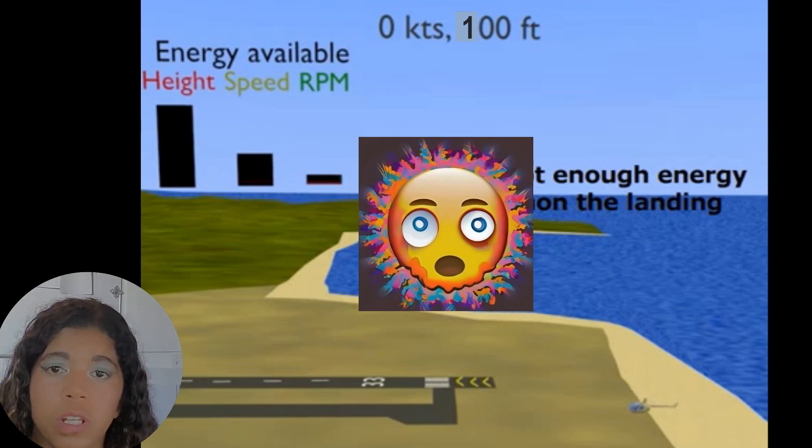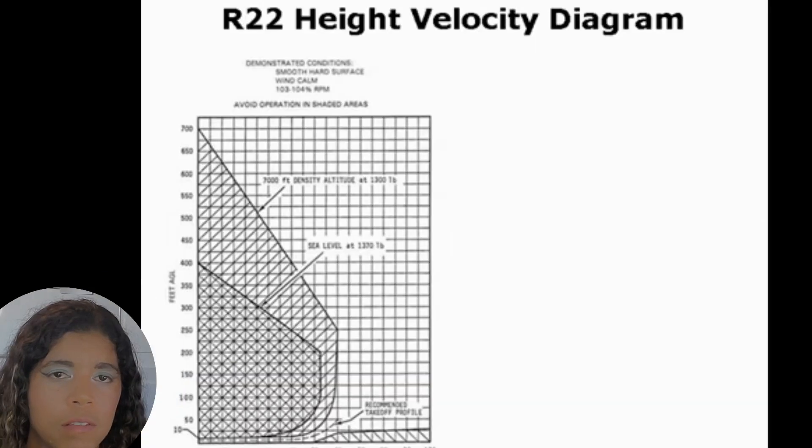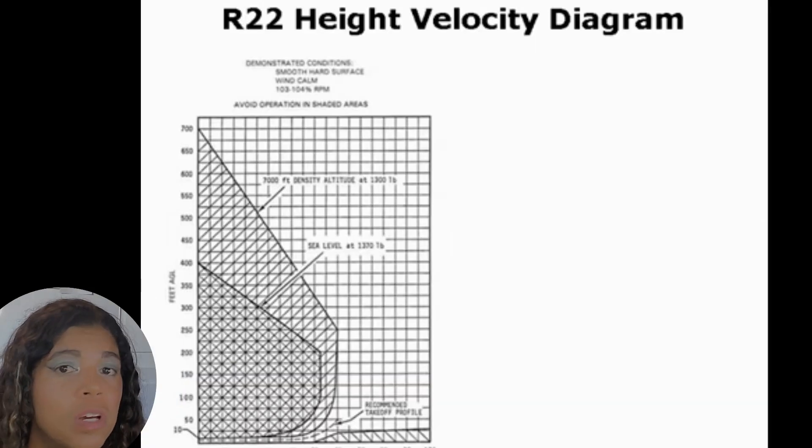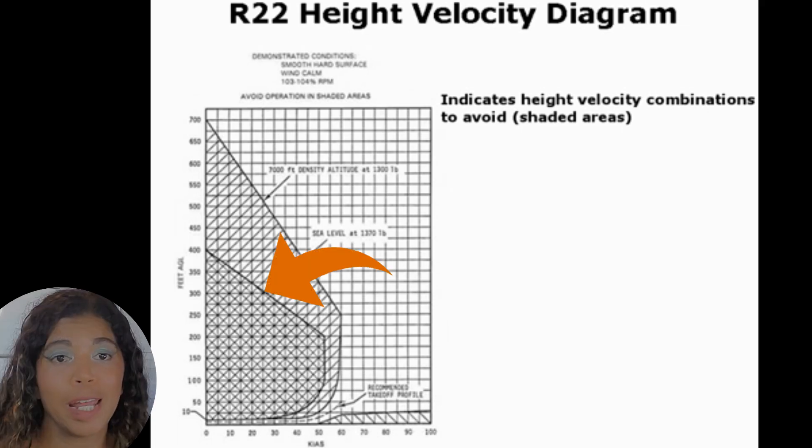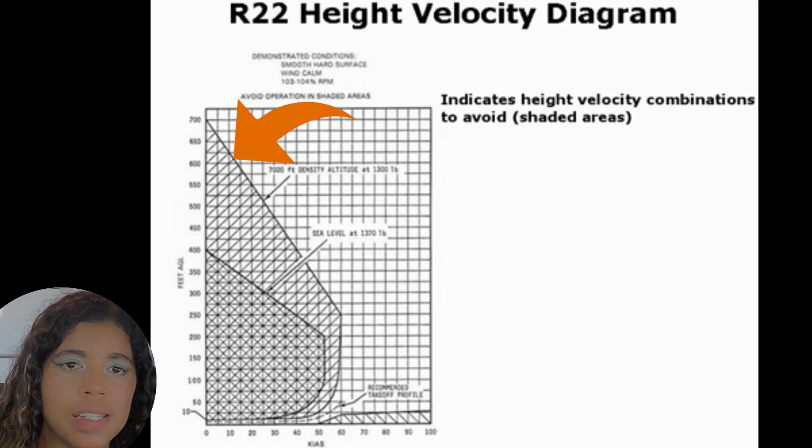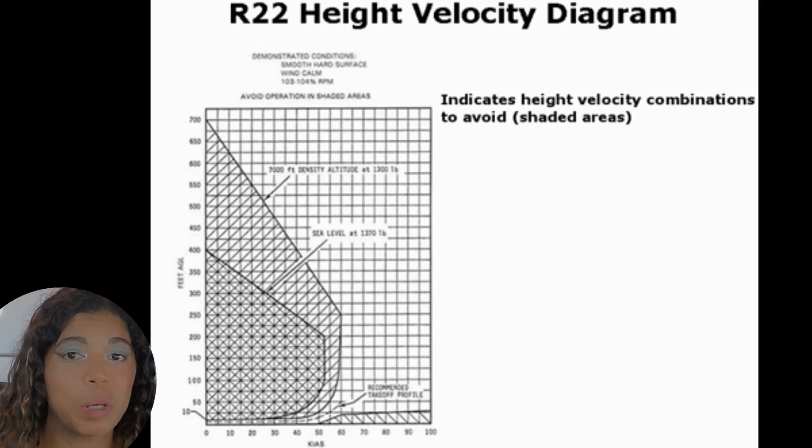So let's go ahead and take a look at the R22's height velocity diagram. The height velocity diagram shows height and velocity combinations that are not recommended if you want to be able to have a safe autorotation landing. These shaded areas represent areas you want to avoid. In one of the shaded areas, the lower one, it indicates sea level and 1300 pounds. In the other case it indicates 7000 feet density altitude and 1300 pounds. As you can see at higher density altitude the shaded region gets larger. The HV diagram can be found on page 5-11 of your R22 POH.